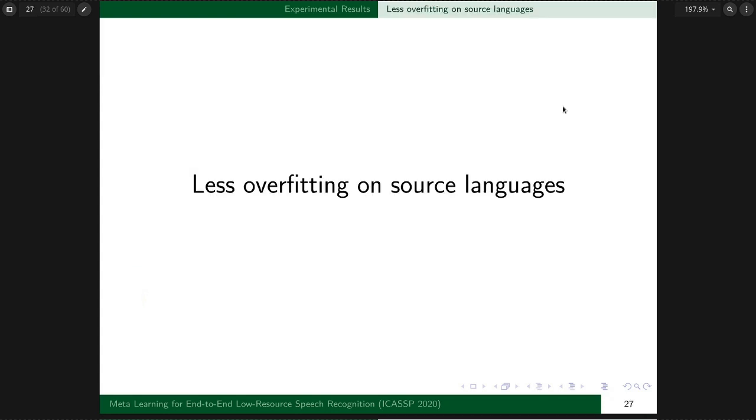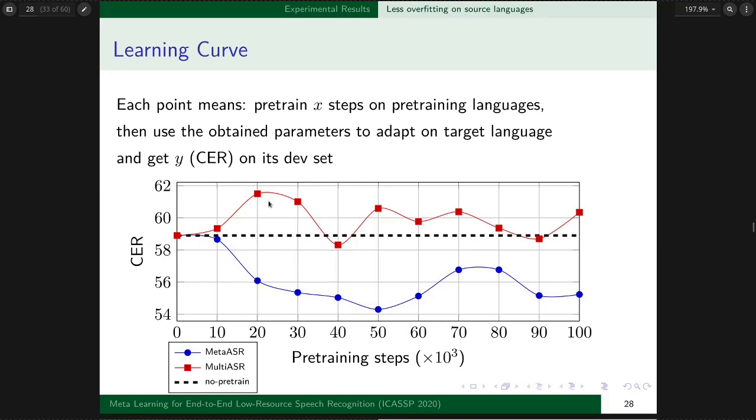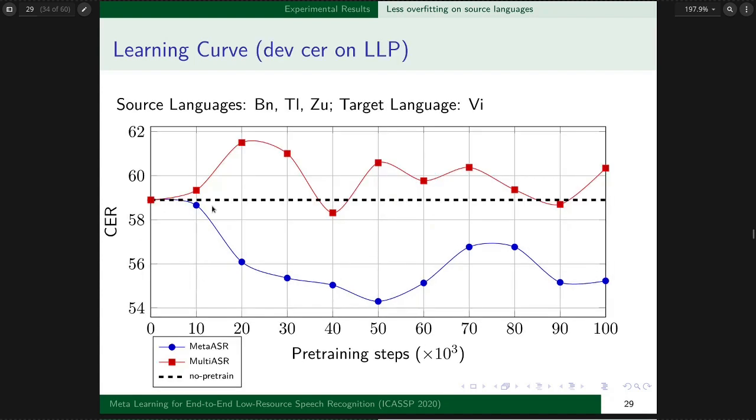To answer the second question, we look at the learning curve. One point on the curve means I pre-trained 20,000 pre-training steps on pre-trained languages, then used the obtained initial parameters to adapt on a target language, getting 56% character error rate on its development set.